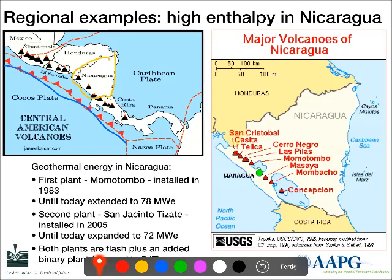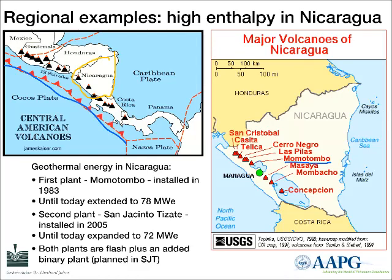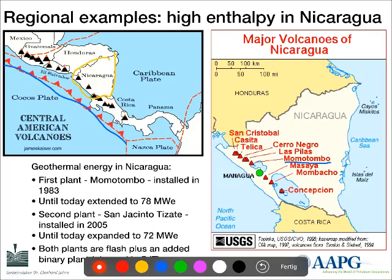The first geothermal plant installed in Nicaragua was the Momotombo plant in 1983, which has produced 78 megawatts until now. In the neighborhood, a second power plant — the San Jacinto Tizate — was started in 2005 and today has some 72 megawatts installed. This is not only a flash plant but also includes a binary plant — so we have a flash process producing steam to run a turbine, and for remaining heat we can run an ORC or Kalina-type binary plant. With enough heat remaining, we could even make direct use for fish farming or greenhouses.